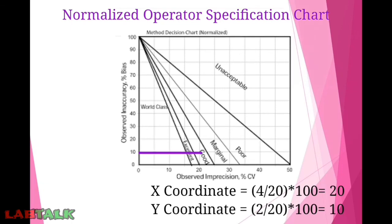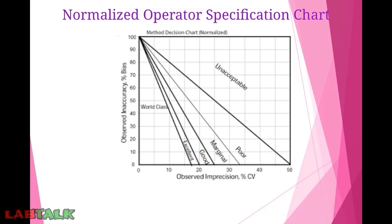Draw a line parallel to the x-axis from y = 10, and a line parallel to the y-axis from x = 20. The intersecting point is the operating point for cholesterol on the normalized operator specification chart. This is how we first plot the normalized operator specification chart and then plot the point corresponding to the analyte cholesterol.